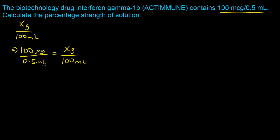Because we have a proportion, the units in the denominator should be the same on both sides of the equation, and the units in the numerator should also match. For milliliters in the denominator, both sides match. However, in the numerator we have micrograms on the left-hand side and grams on the right-hand side, so we need to convert the micrograms to grams before we can properly use this proportion.